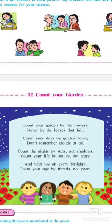We have a small exam and small explanations about this poem. Let us read: 'Count your garden by the flowers, never by the leaves that fall. Count your days by golden hours, don't remember clouds that fall.'